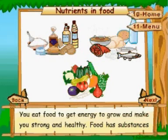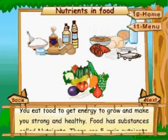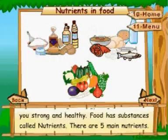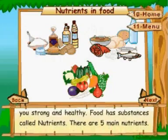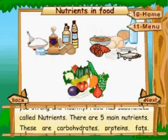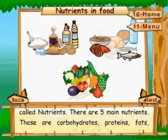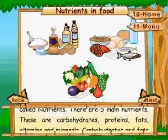Food and health: nutrients in food. You eat food to get energy, to grow, and to make you strong and healthy. Food has substances called nutrients. There are five main nutrients.